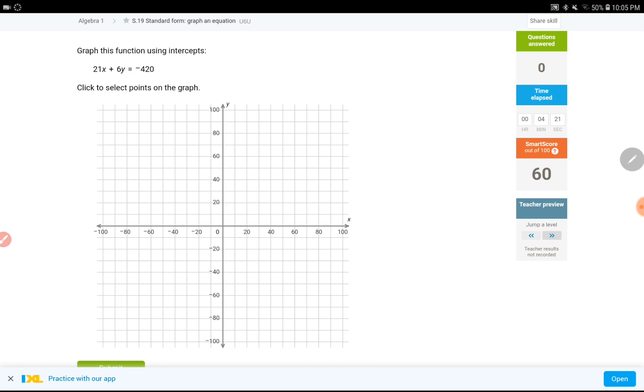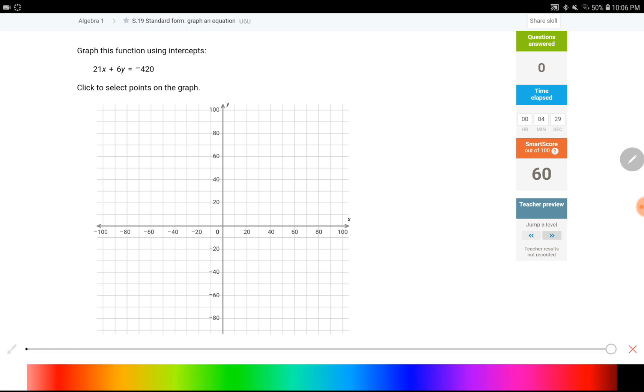Okay, S19 again, we still have a standard form equation. The only difference is this time it looks a little bit bigger numbers. So first, let's just plug in 0 for the x value. 21 times 0 plus 6y equals negative 420. This right here, that's 0. You can cross it out. So bring down the 6y on the left and negative 420 on the right. If I divide each side by 6, I can get the y by itself. So y would be equal to negative 70.